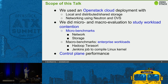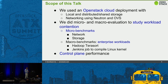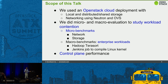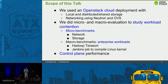Let me go over the scope of the talk, because performance is a very wide topic and in 30 minutes you cannot cover everything. We are going to use an OpenStack cloud deployment with both local storage as well as a form of shared storage where there is application sharing across hosts. We'll use networking with Neutron and OVS with DVR, and we do two kinds of evaluation studies — both micro as well as macro. For micro benchmarks, we primarily focus on networking and storage, as these are the most shared resources in a cloud environment.